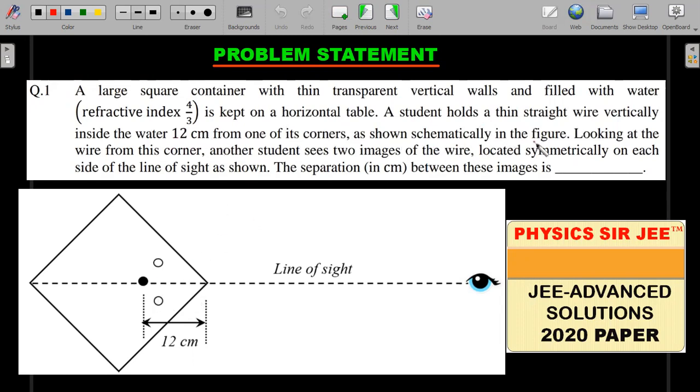Looking at the wire from this corner, another student sees two images of the wire located symmetrically on each side of the line of sight. The separation in centimeters between these images is what we need to find.